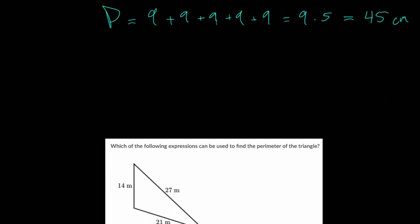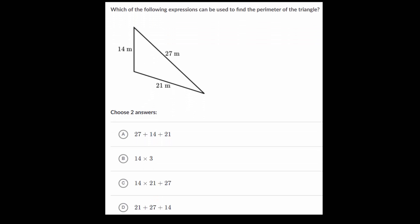Let's do one final question. In this one, we have a triangle. Which of the following expressions can be used to find the perimeter of the triangle? Again, we're just looking at the length around the outside of this triangle. We just need to add up all of these outside side lengths: we can take 14, add that to 27, and then add that to 21.